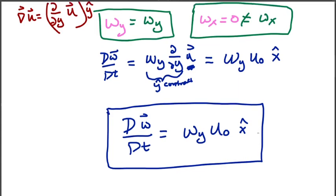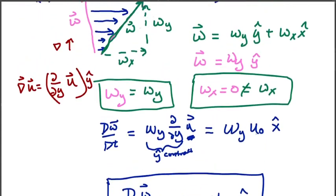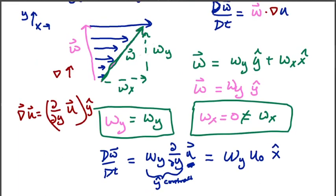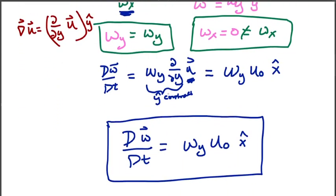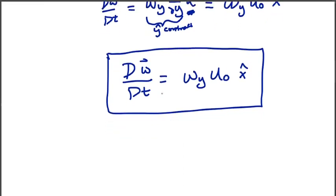We can see that in our picture that we drew, all of the generated vorticity is this omega X downstream, whereas the cross stream vorticity is unchanged. And we're gonna find out that this is true in general.